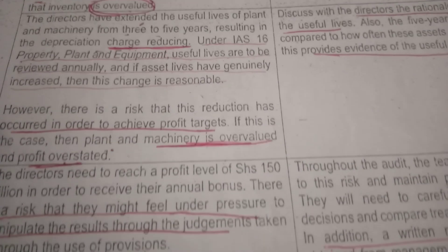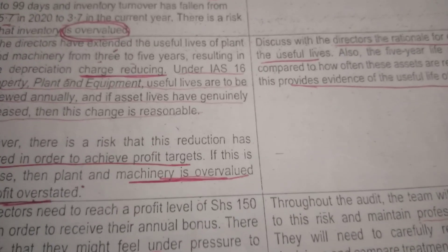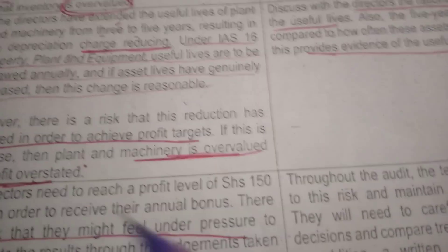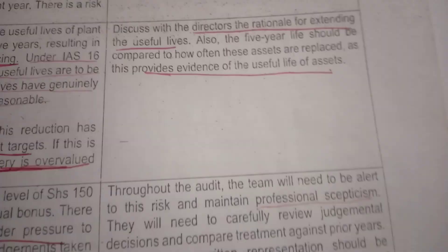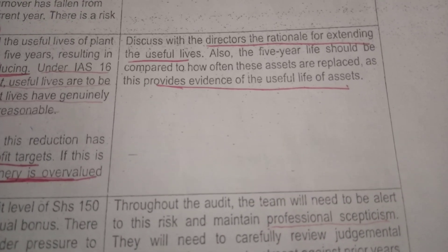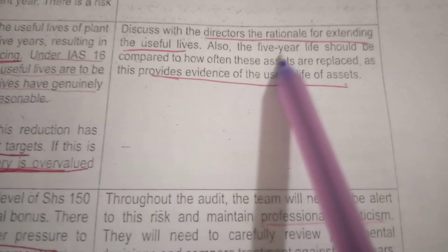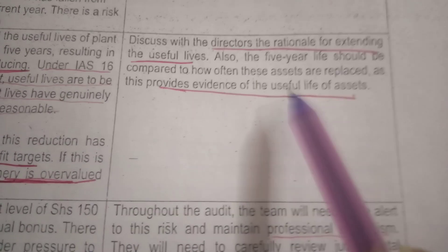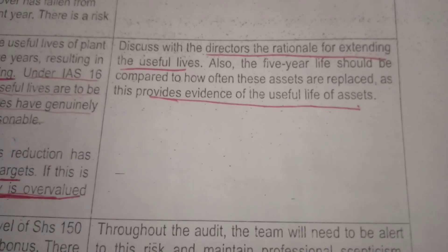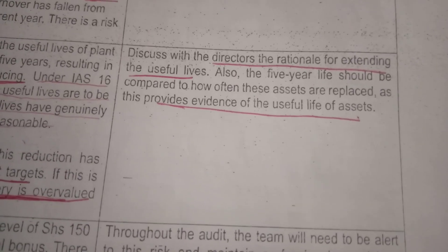Where you see a decrease in the depreciation of plant and equipment, just know that plant and machinery is overvalued and profit is overstated. The auditor's response is to discuss with the directors the rationale for extending the useful life, and also compare the five-year life to how often these assets are actually replaced, which provides evidence for the reasonableness of the useful life.